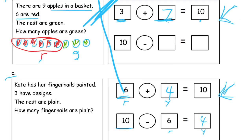Then we have our last story, and we know which box it's going to go with — it's the only one left on the page. Kate has her fingernails painted. Three have designs and the rest are plain. This is a tricky one because they don't tell you the total directly. There's no other number in the story — sometimes they spell them out as a word. You have to think: Kate has fingernails — how many fingernails do you have? Most people just have ten, five on each hand. So we can say we know there's ten.